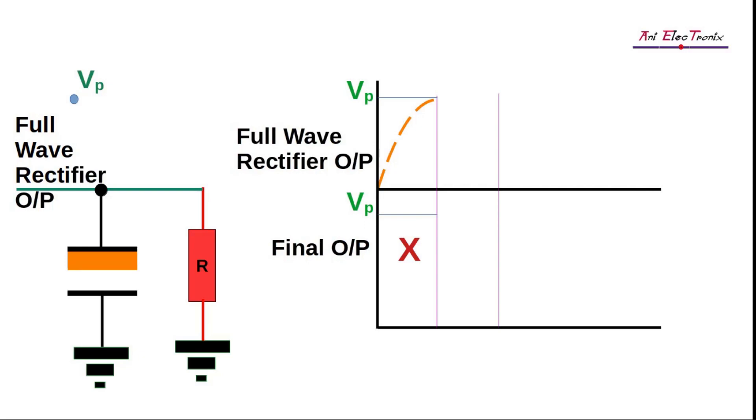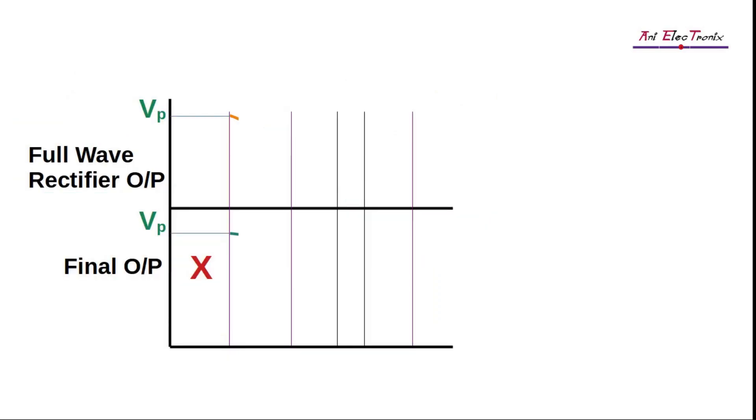While the rectified pulsating voltage drops below the capacitor voltage, the capacitor starts discharging and supplies a current to the output. In comparison to the charging of the same capacitor, the discharging will be slower.